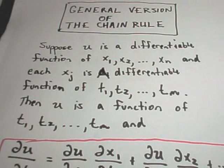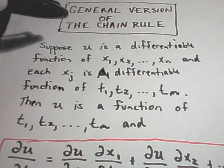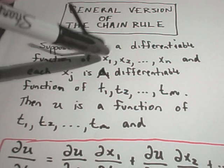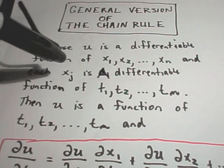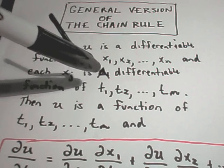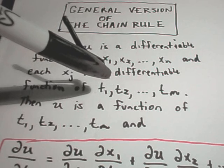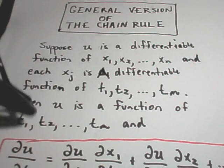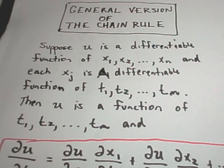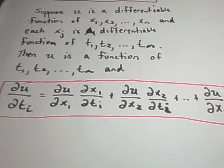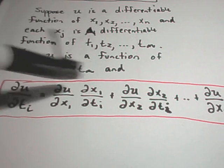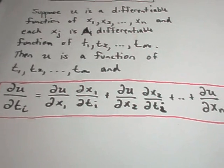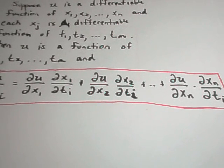In this video I'm going to talk about a more general version of the chain rule. Suppose we have a u that's a function of the n variables x1 through x sub n, and each of these x sub i's is a differentiable function of the variables t sub 1 through t sub m. Then u is a function also of the t variables, and if you want to find the partial derivative of u with respect to any one of the t sub i's, you have this corresponding formula.